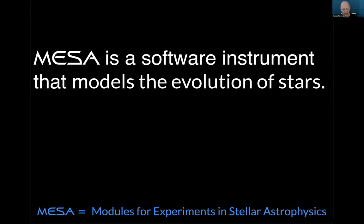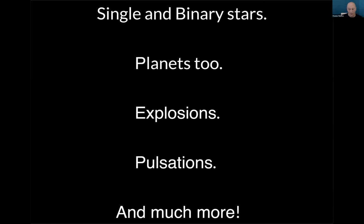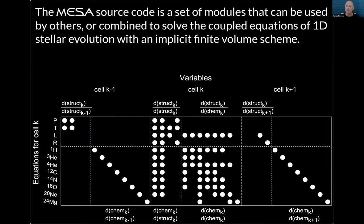What I meant to say was single and binary stars, planets too, explosions, pulsations, and so much more. MESA has a lot of capability. The MESA source code itself is a set of modules that can be used by others or combined to solve the coupled equations of 1D stellar evolution with an implicit finite volume scheme. The image here is one row of the derivative matrix showing the locations of non-zero locations — the Jacobian matrix — which contains both structure and isotope information.